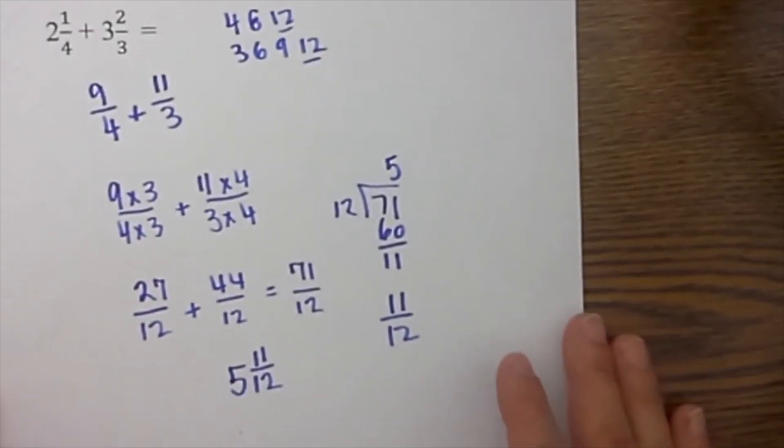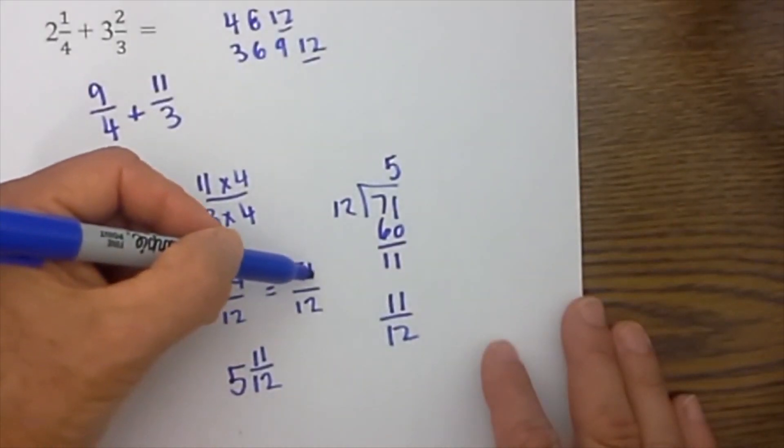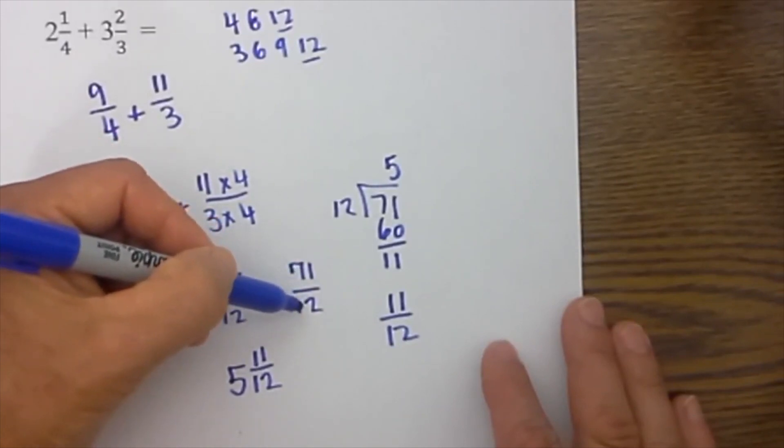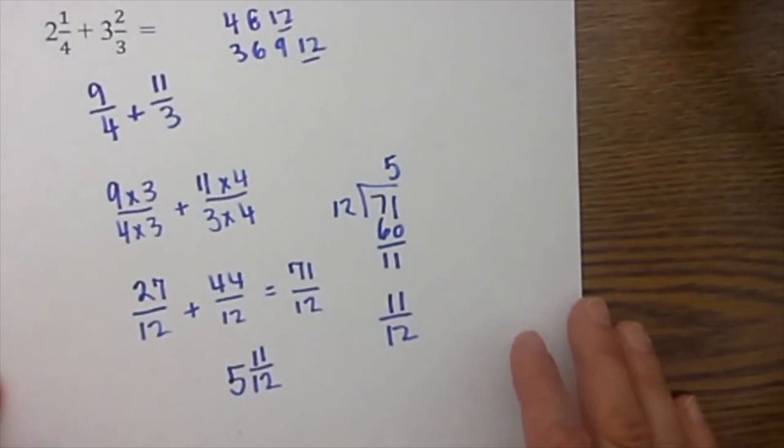So I hope that helps. Let me recap what I did. I converted it to an improper fraction, found the lowest common denominator, added them, and then converted it into a mixed number by dividing the numerator by the denominator. And whatever I had left over I converted that into a fraction. Hope this helps.